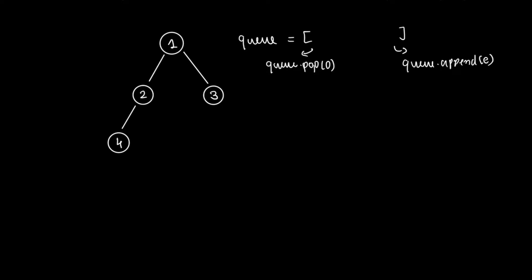I'll also declare a variable called 'visited', which is another empty list. This will store the nodes that we visit during the breadth first search traversal. The approach starts with adding the root node to the queue.